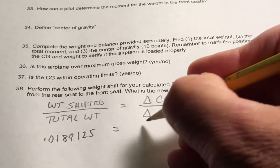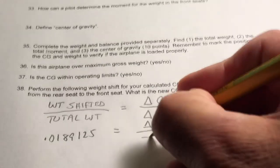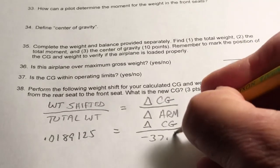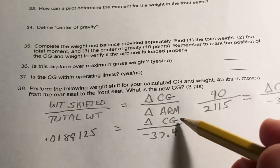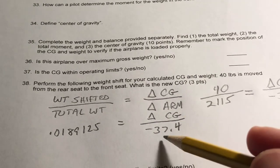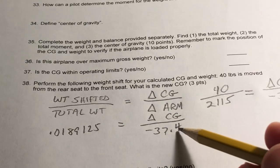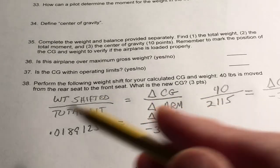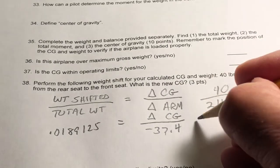So that equals the change in CG over negative 37.4. Okay, now we need to solve for the change in CG. How do we do that? Well, we're dividing here by minus 37.4, so I can multiply both sides by minus 37.4 to solve for the change in CG.